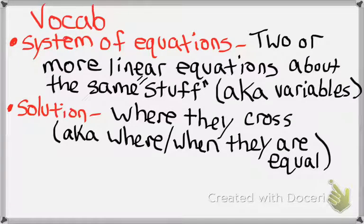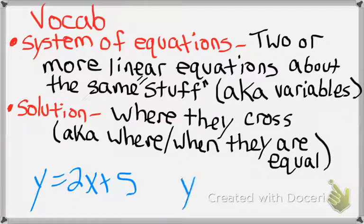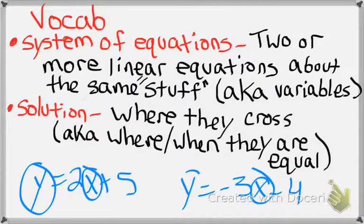Some slightly new vocabulary: let's make sure we're clear what a system of equations is. It's two or more linear equations about the same stuff — the variables. For example: y = 2x + 5 and y = -3x - 4. These two equations use the same variables, so you can graph them on the same graph, and these graphs will cross.